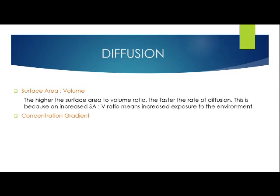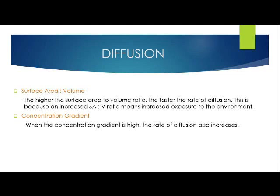Next, we have the factor of concentration gradient. When the concentration gradient is high, the rate of diffusion also increases. This is because there will be a very steep gradient between the two regions. Since diffusion is the movement of particles from higher to lower concentration, when there's a steep concentration gradient, the particles will work to bring the situation into equilibrium and create a uniform environment.